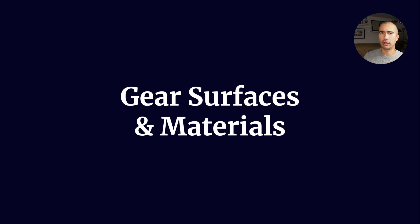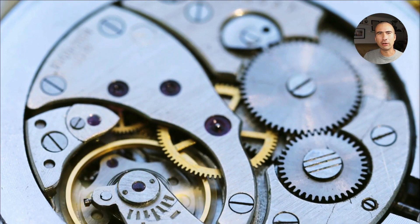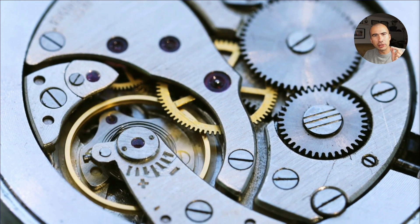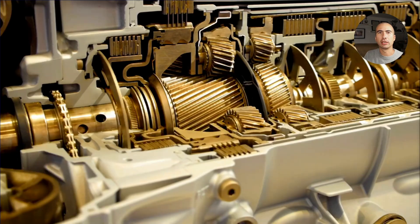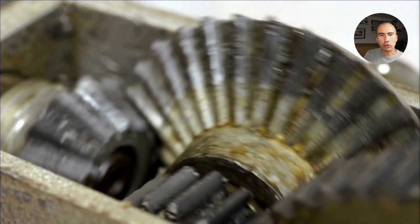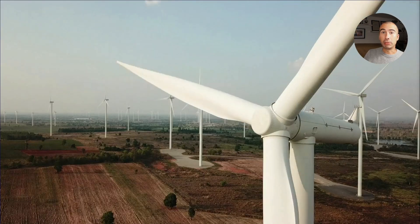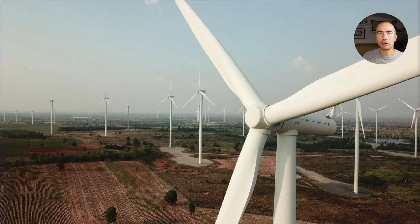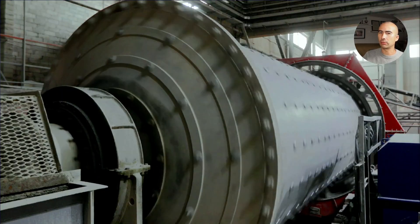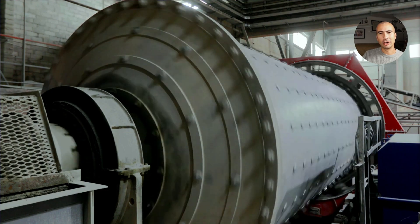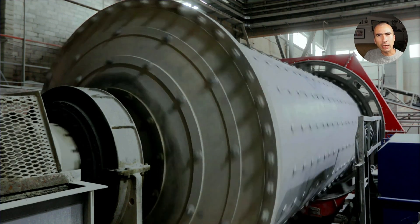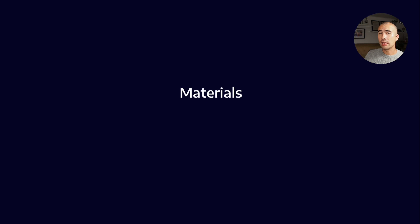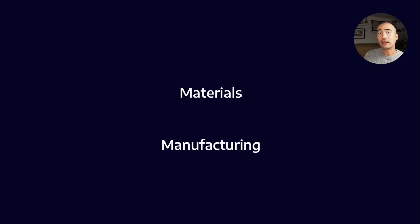The reason why this is such a varied subject is think about all the different gear applications. You've got something like a watch — very precise, very small. Then you've got a bicycle with chain and sprocket. Then there's automotive gear drives, then an industrial gearbox, then bigger still, wind turbine gearboxes. And then right at the top of the tree, you've got something like the gears on a ball mill at a mine. Because there are so many different applications, it stands to reason that there are many different materials and manufacturing processes that we can use to make gears.